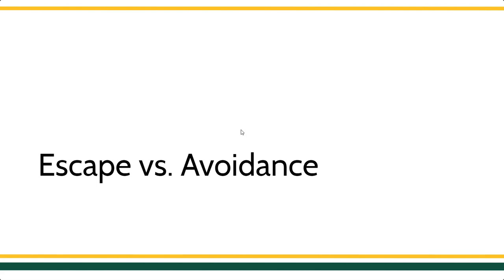We're going to take a little time here. I'm going to give you a few different examples. We're going to identify if we're looking at an example of negative reinforcement, if we're looking at escape or avoidance. We're also going to try to identify the behavior that is changing as well as the reinforcer in these upcoming behavior change procedures.